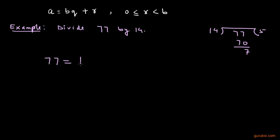77 was divided by 14, 5 is the quotient and 7 is the remainder. If we compare this statement with Euclid's Lemma,